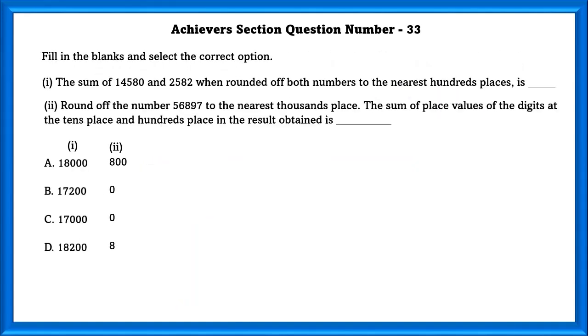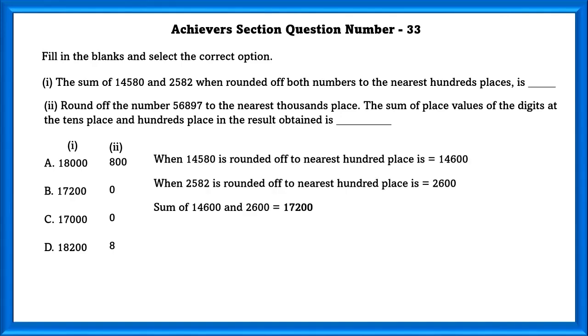Achievers Section Question Number 33. Fill in the blanks and select the correct option. The sum of these two numbers when rounded off both numbers to the nearest hundredth place is. If we round off these two numbers and if we add, we will get 17,200.